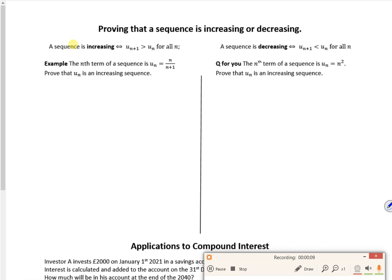Right, so we're going to prove that something's increasing or decreasing. This was on the spec paper, so we've added it. The important bit here is if it's increasing, the next term is bigger than the one before. And if it's decreasing, the next term is smaller than the one before.